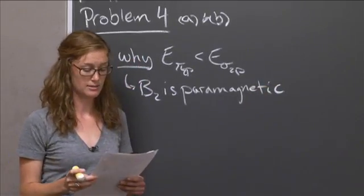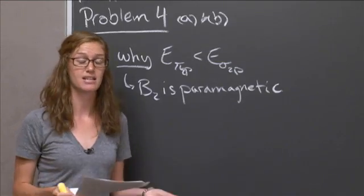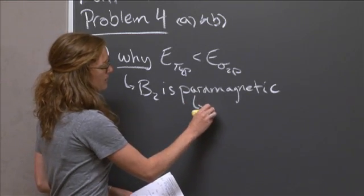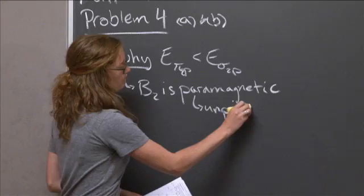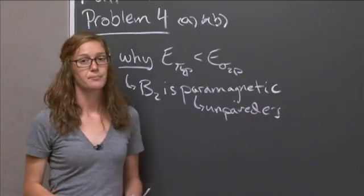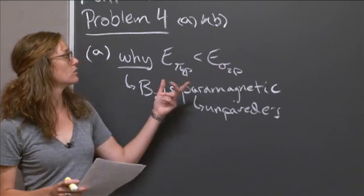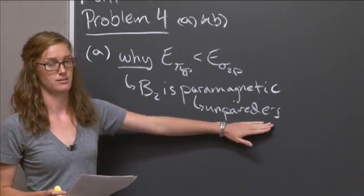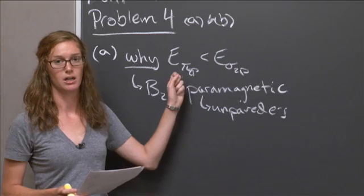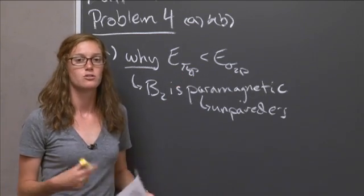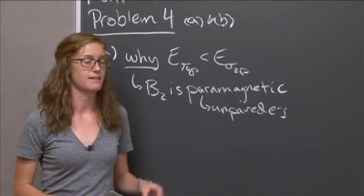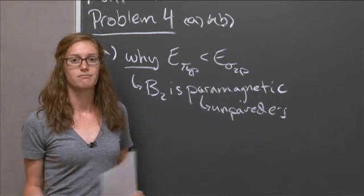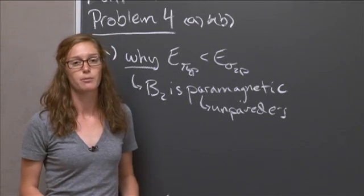What is this question actually asking you to do? It's asking you why the energy of the π₂p is less than the energy of the σ₂p given that boron 2 is paramagnetic. The first thing we need to know is what paramagnetic means. It means you have unpaired electrons. We are asked to give a reason why the fact that there are unpaired electrons implies a certain ordering of the σ and π₂p orbitals. The first thing we want to do is recognize that these are molecular orbitals, not atomic orbitals. Therefore, we probably want to start by drawing the molecular orbital diagram for boron.